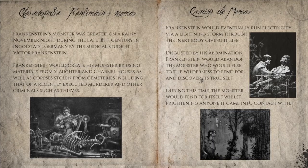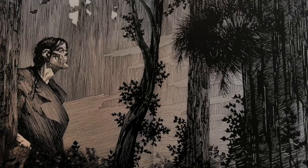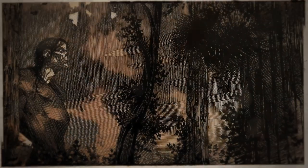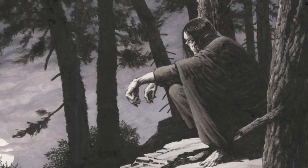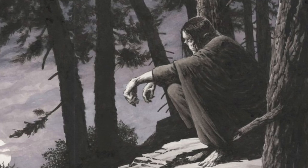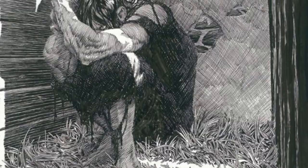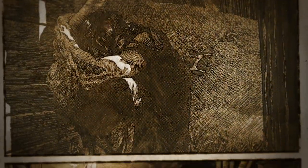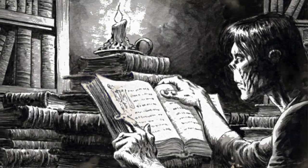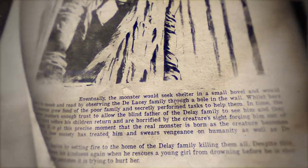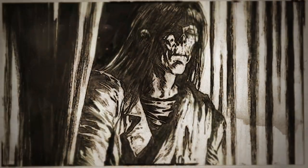Disgusted by his abomination, Frankenstein abandoned the monster, who fled to the wilderness to discover its true self. During this time the monster fended for itself whilst frightening anyone it came into contact with. Eventually the monster sought shelter in a small hovel and learned to speak and read by observing the de Lacey family through a hole in the wall. Whilst there, the monster grew fond of the poor family and secretly performed tasks to help them.